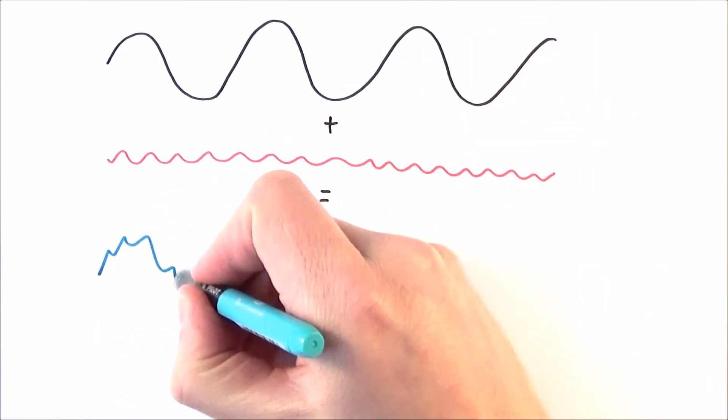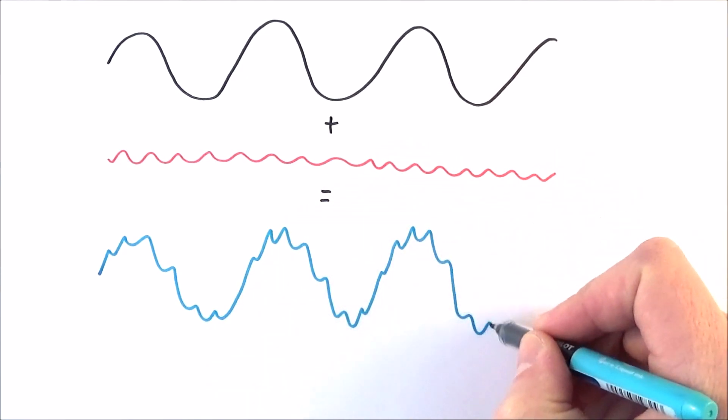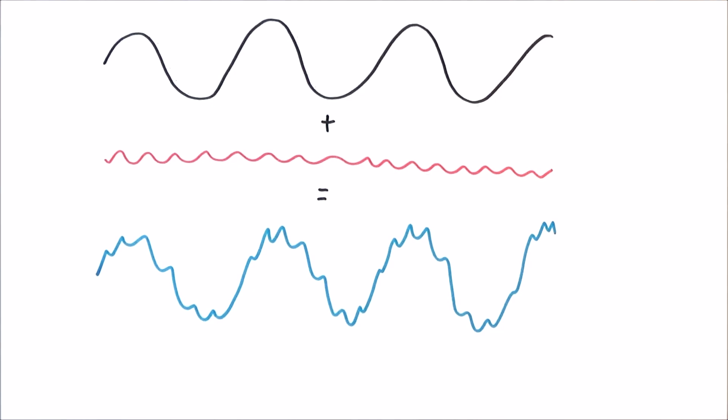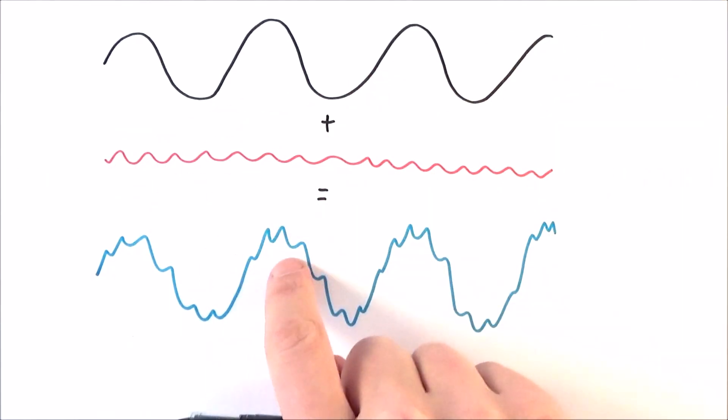And what we get is something a bit like this. Now it's not easy to draw, but effectively what we have is the smaller wave superimposed onto the top of the wave. And this is how frequency modulation works and how a carrier wave allows us to transmit data, especially radio programs over a long distance.